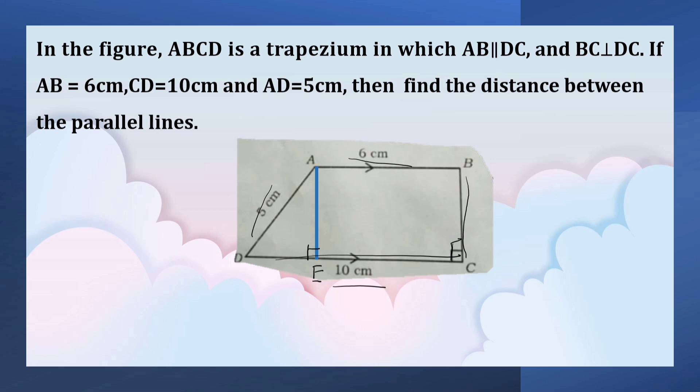So, BC is equal to AE and AB is equal to EC. This is 6 centimeters. You can observe that DE is equal to 4 centimeters.